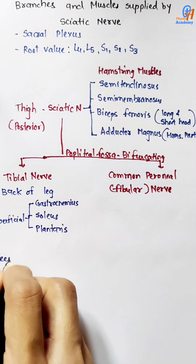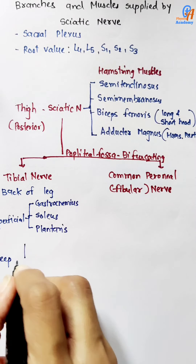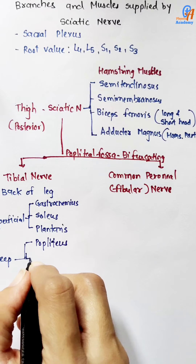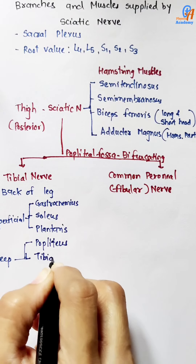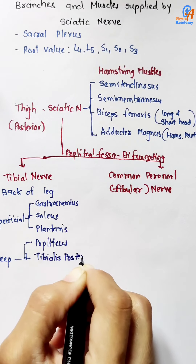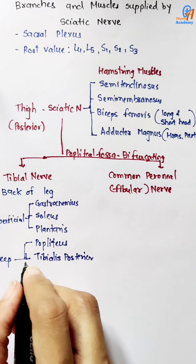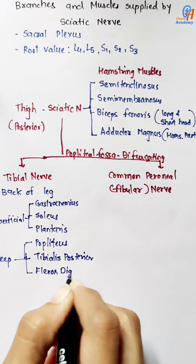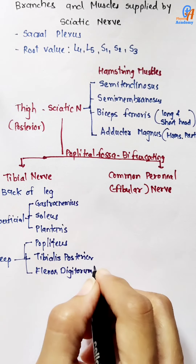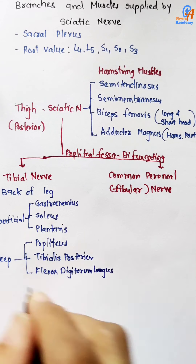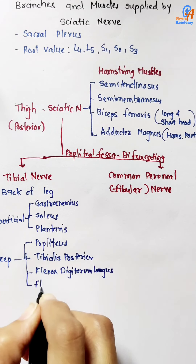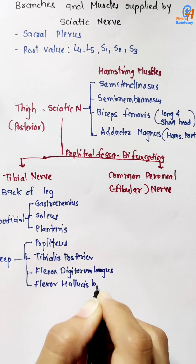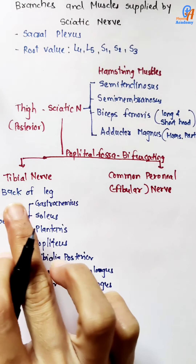In the deep muscles of the back of the leg, the tibial nerve supplies popliteus, tibialis posterior, flexor digitorum longus, and flexor hallucis longus.